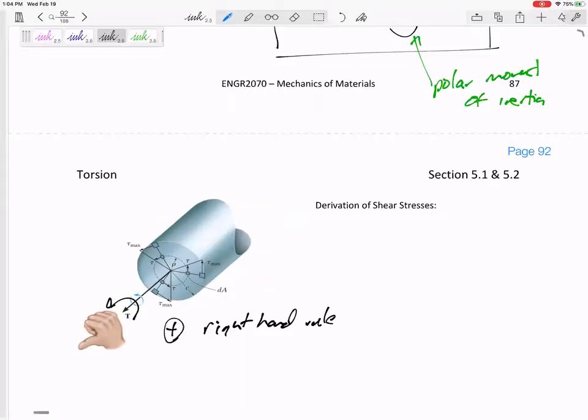So positive torque and positive shear stress would be right-hand rule, positive out of the cut. If you're looking down the barrel of the cut, counterclockwise is positive.